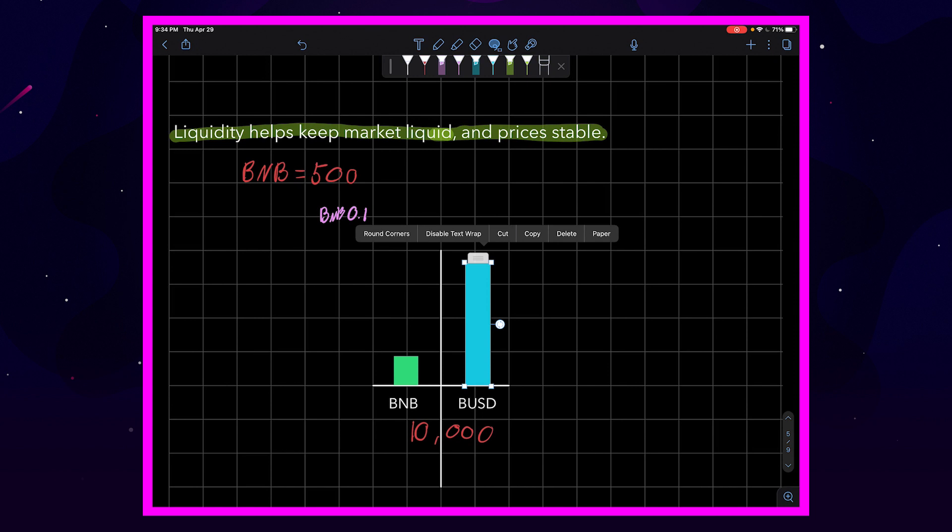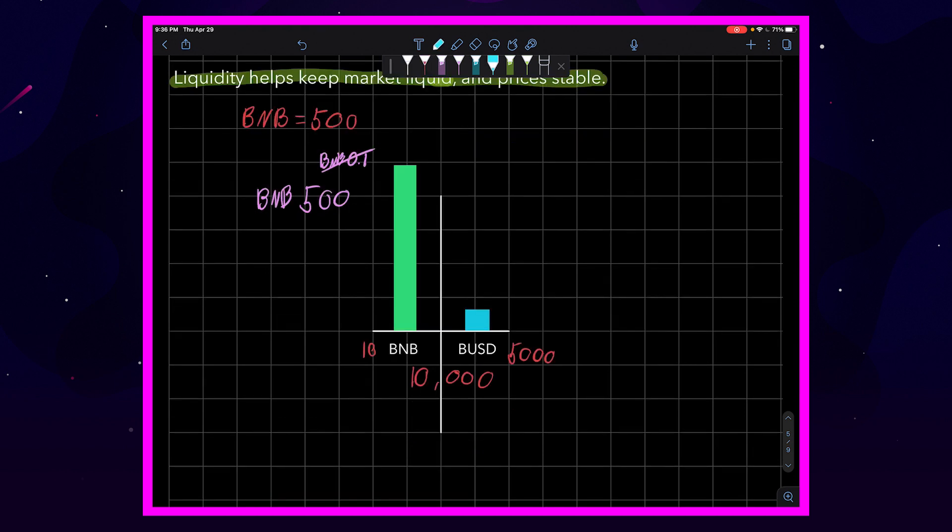Well, what if we did something crazy like decided to put in 500 BNB into a pool that only has 10 BNB? Remember, because we have $10,000 worth of liquidity, we would have 10 BNB and 5,000 BUSD. Well, let's see.